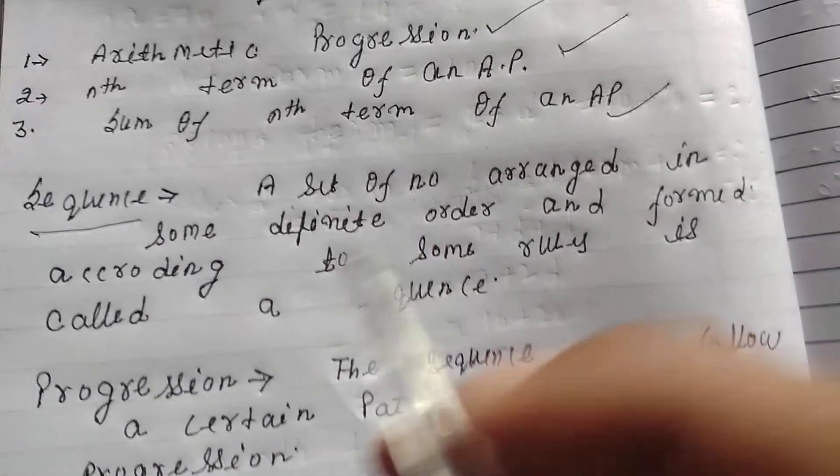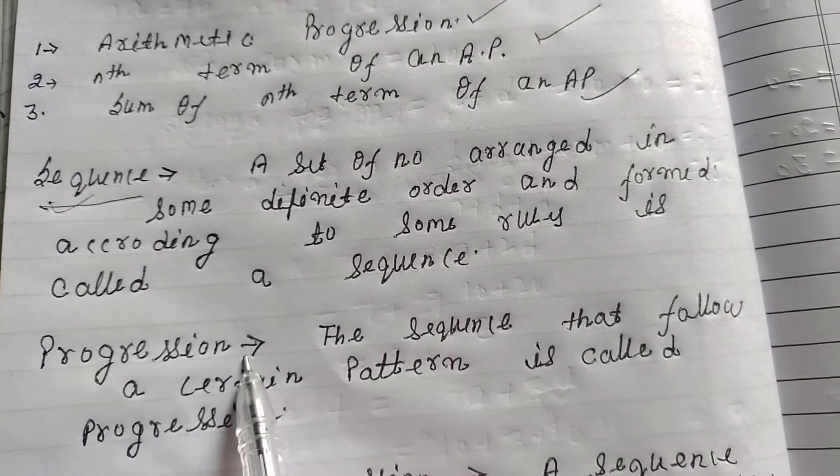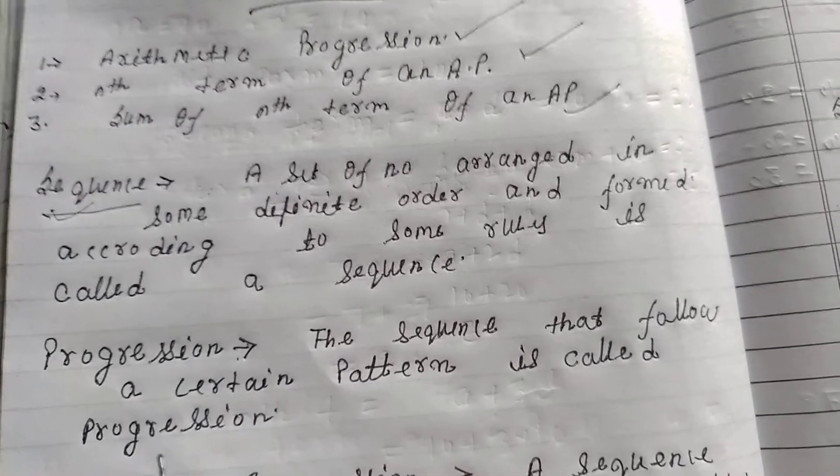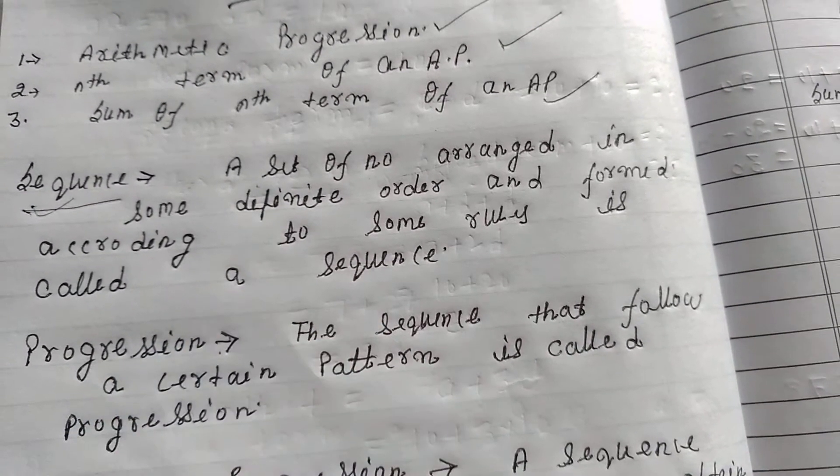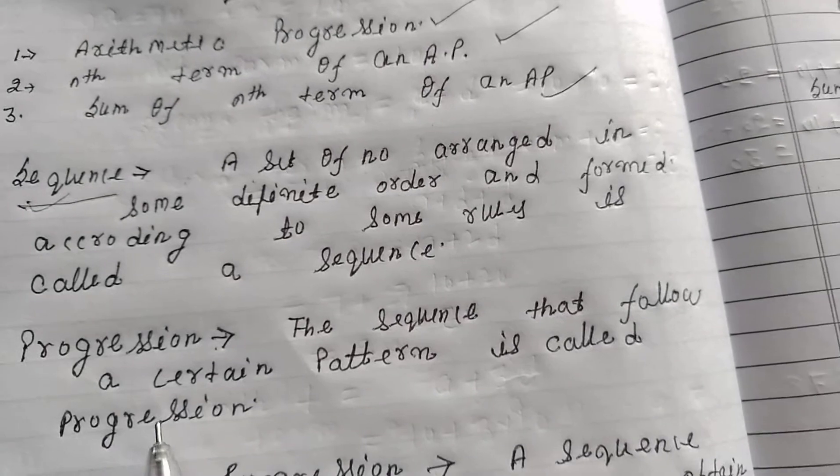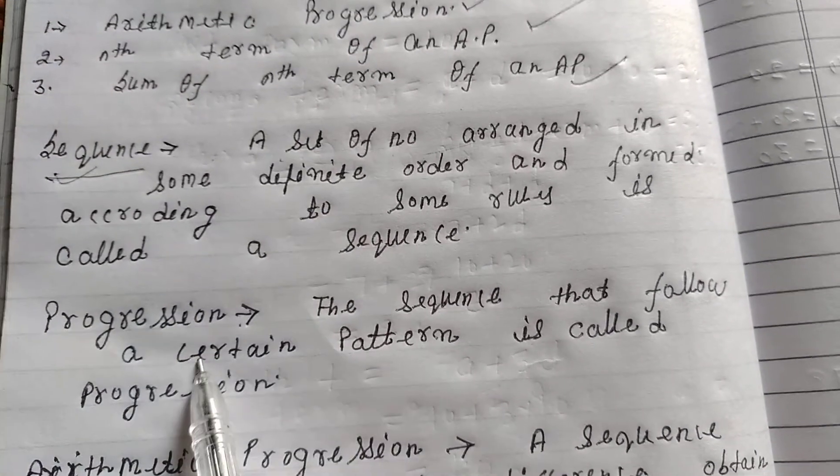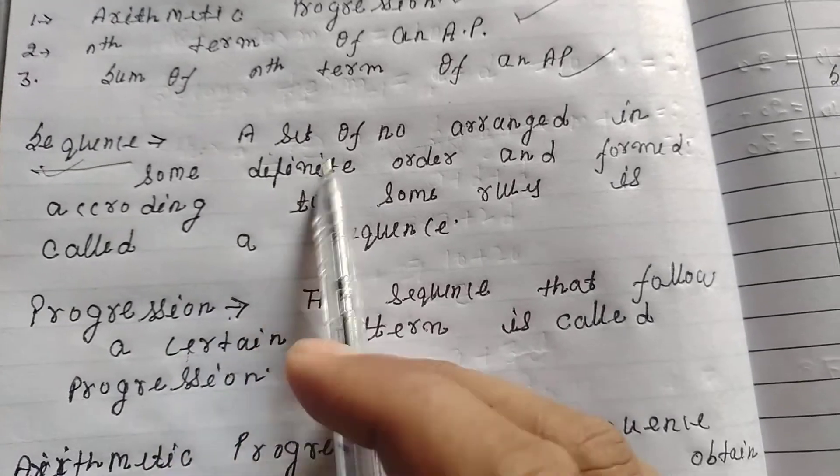What is progression? Progression is the sequence that follows a certain pattern - even pattern, multiplication pattern, or division pattern like this. So sequence and progression are mixed up and made arithmetic progression.